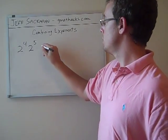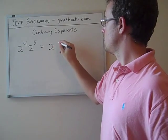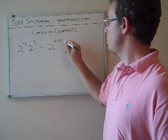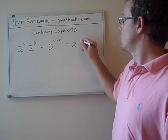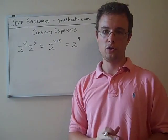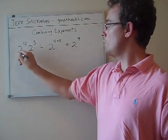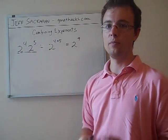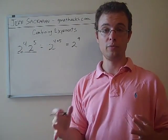So let's say we have 2 to the 4th times 2 to the 5th. Same base. What we do? We add the exponents. So 2 to the 4 plus 5 power, or 2 to the 9th. That's all there is to it. And remember that works only when the bases to the exponents are multiplied together.